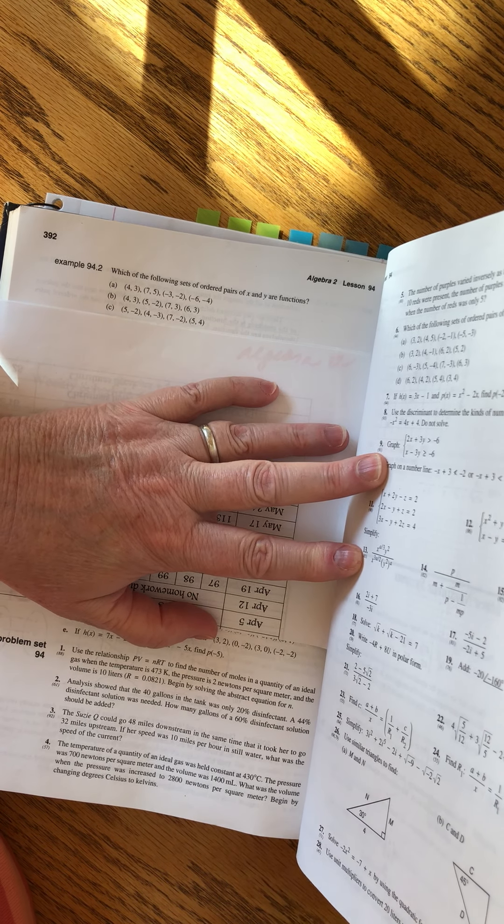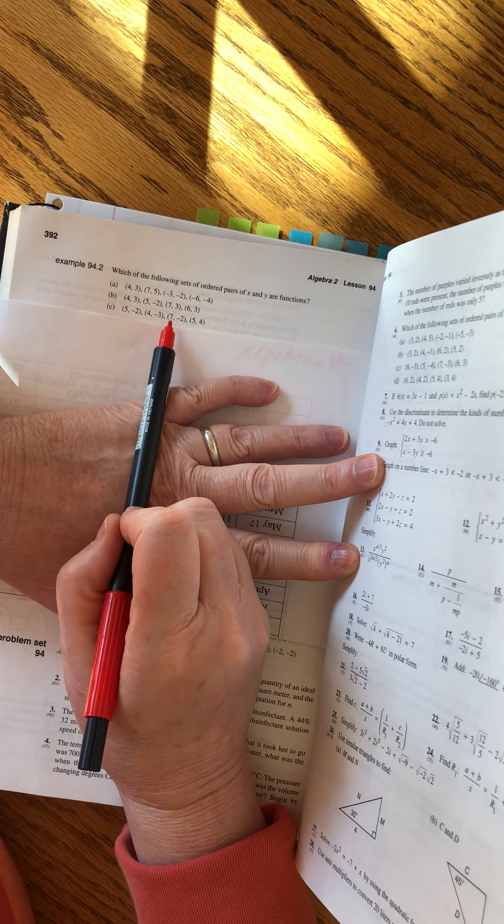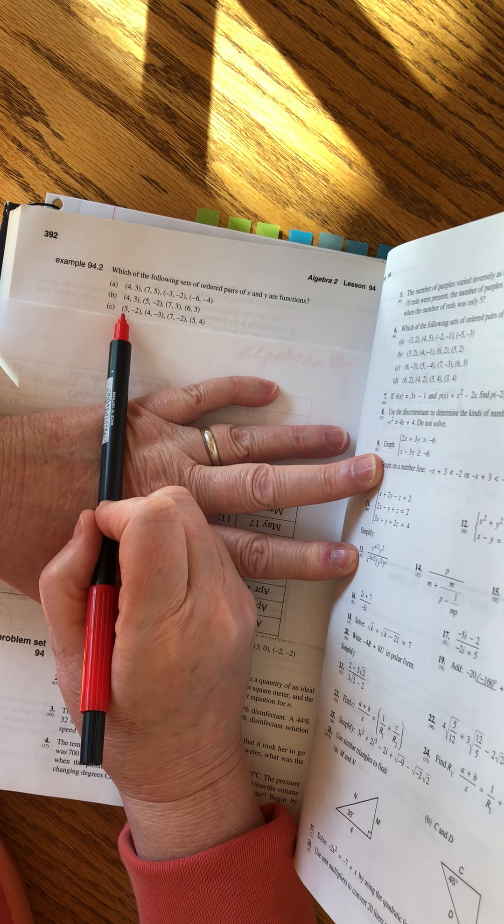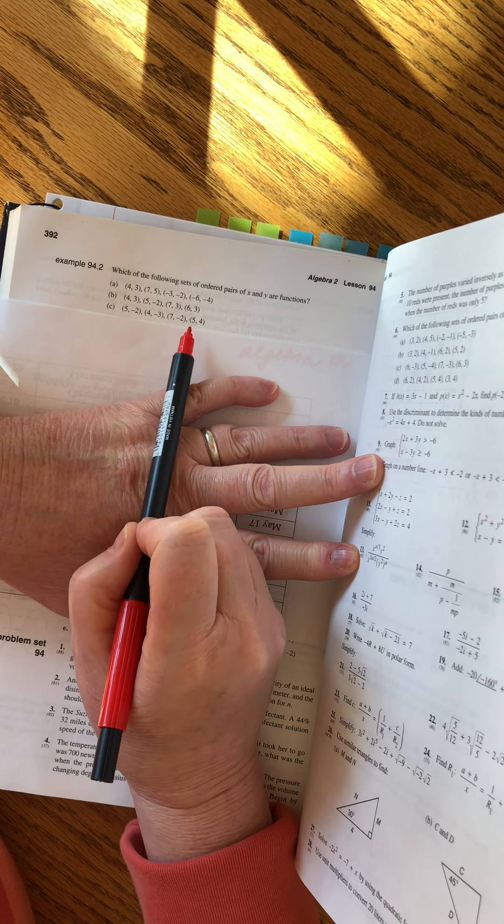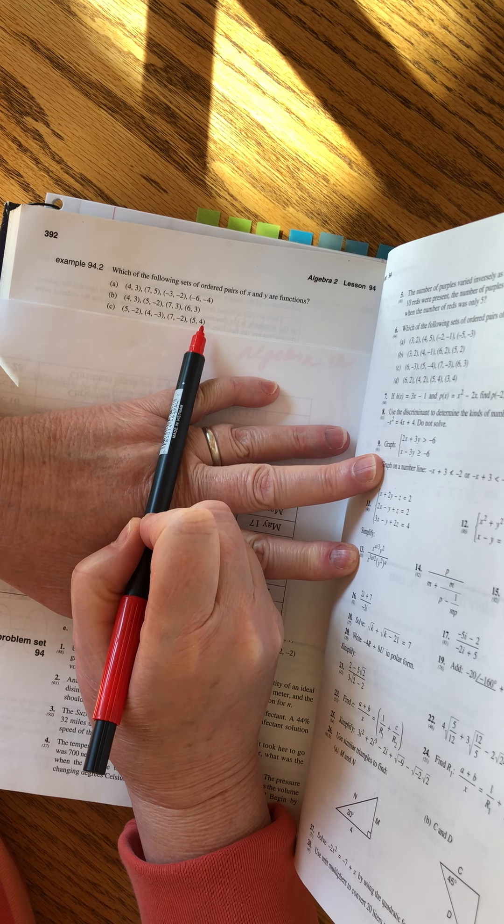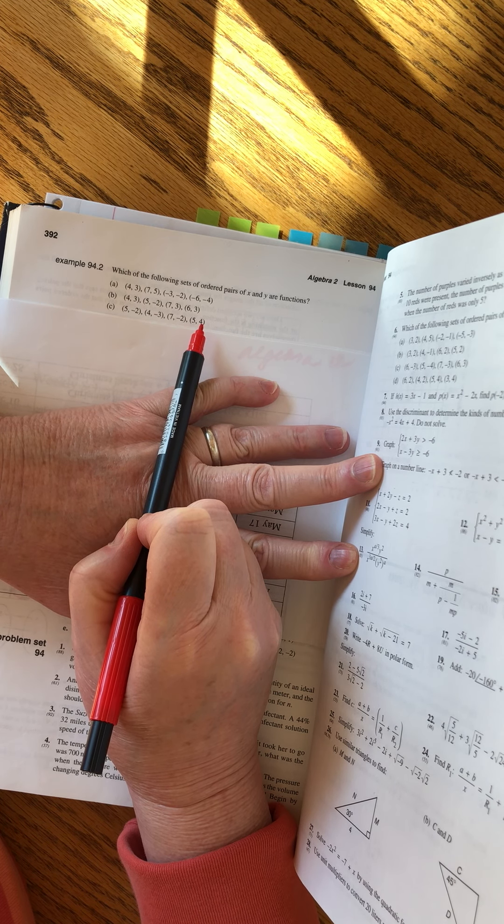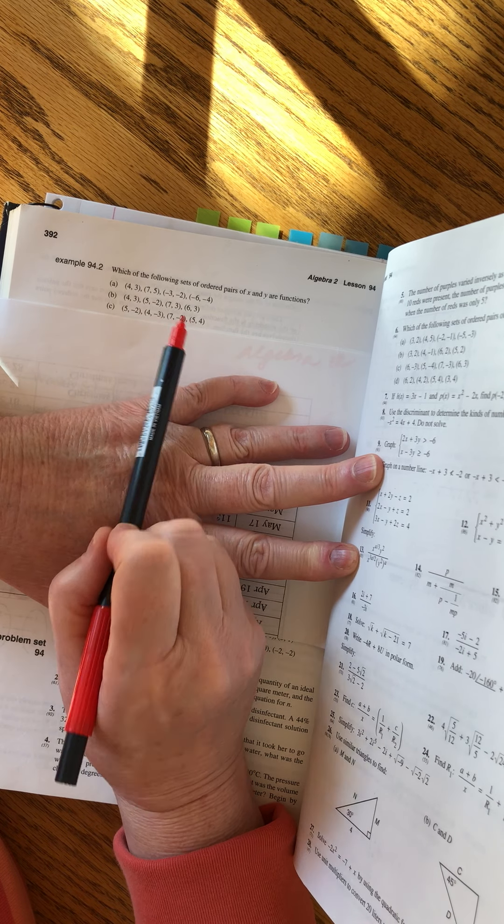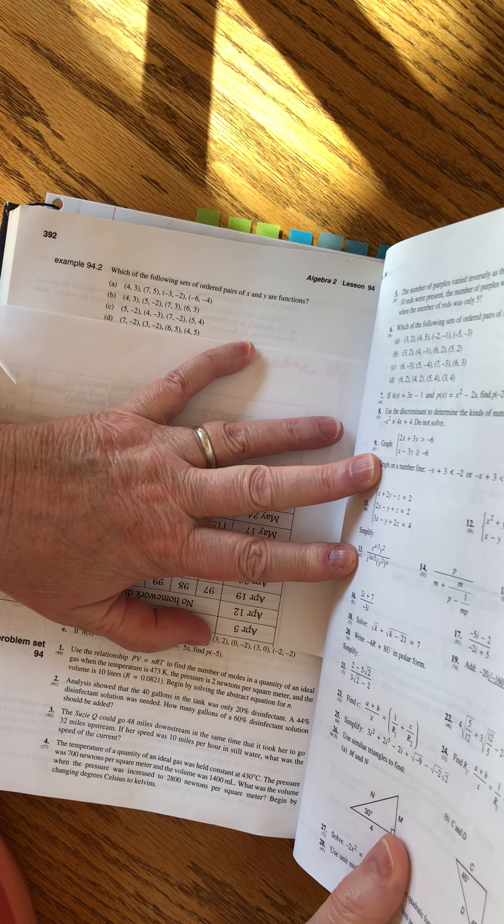What about C? Five, four, seven, five. All right. I said five twice. In the first one, five is paired with minus two. And the second one, five is paired with four. Uh-uh. No, that's a deal breaker. Five needs to be with the same number every time. So C is not a function.